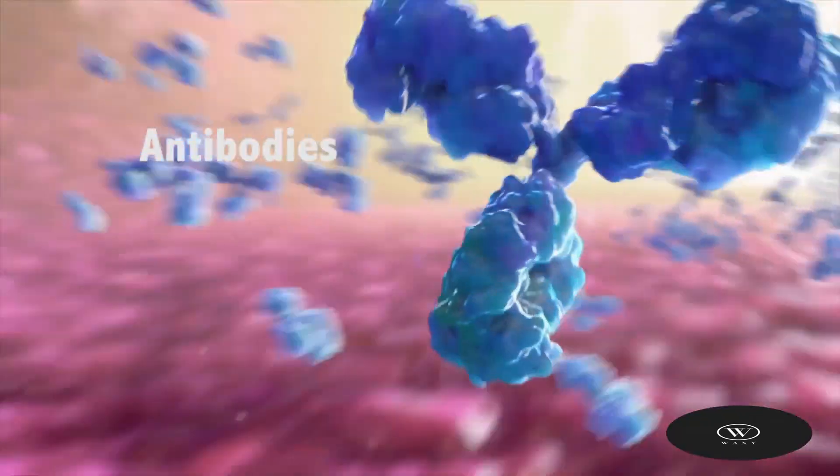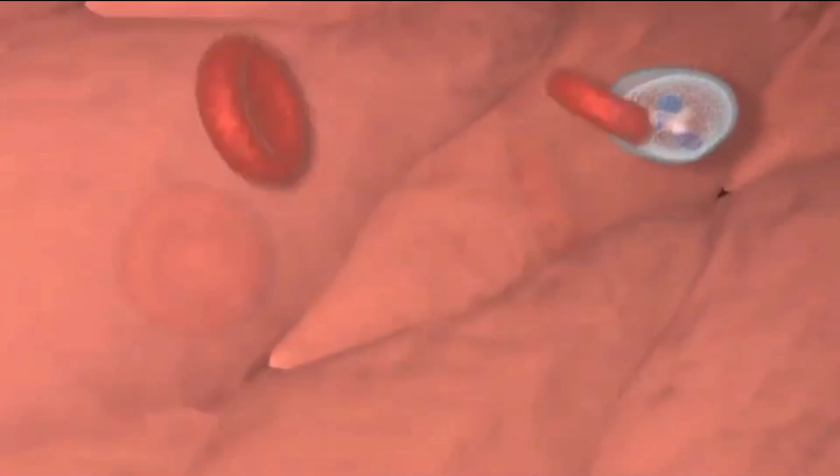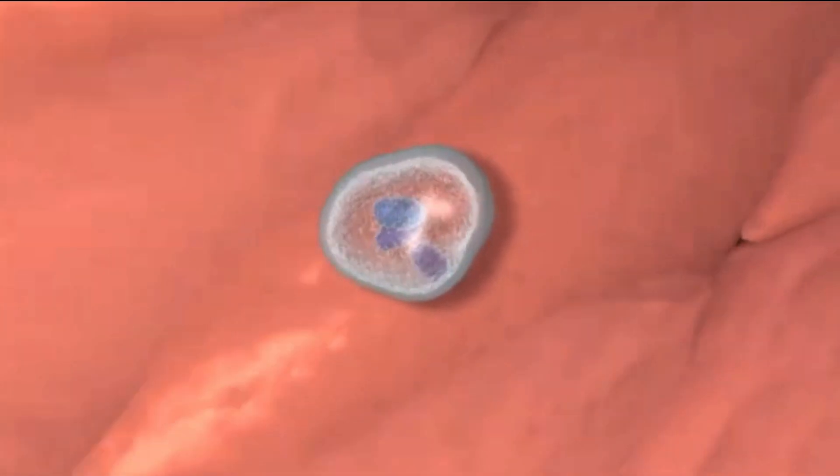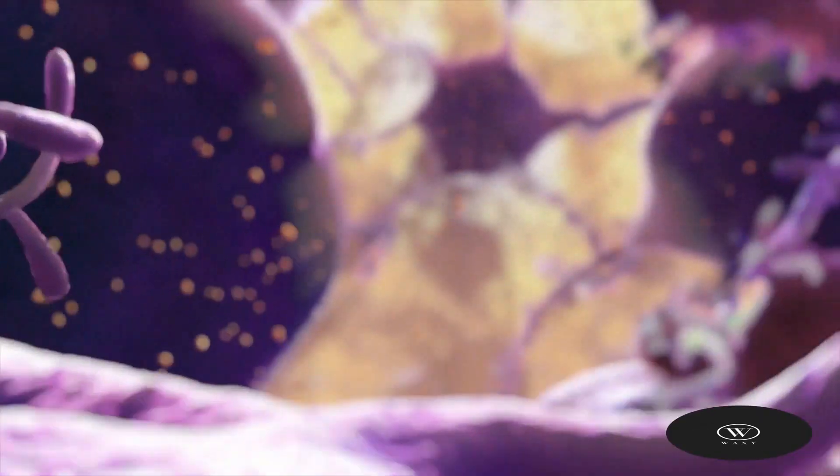To understand how COVID-19 vaccines work, it helps to first look at how our bodies fight illness. When germs, such as the virus that causes COVID-19, invade our bodies, they attack and multiply.